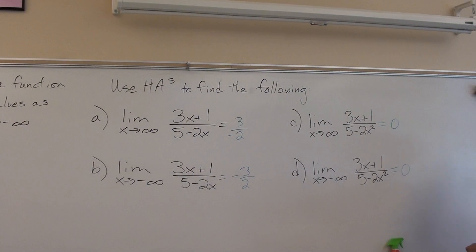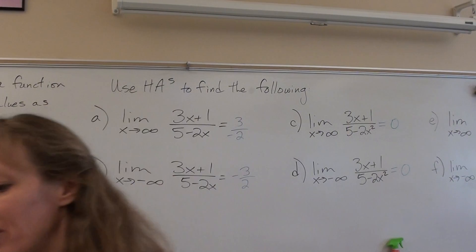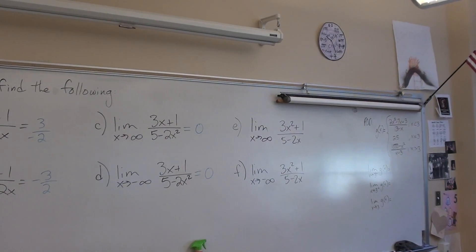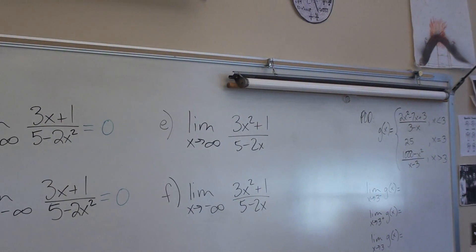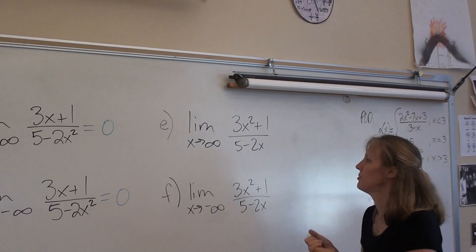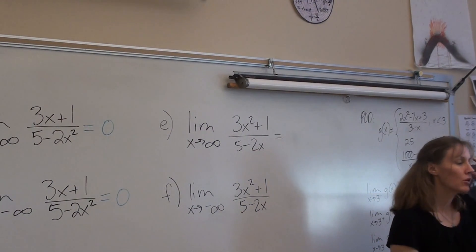But we also have to learn how to do problems of this type, which would be the limit as x approaches infinity of 3x squared plus 1 over 5 minus 2x, and the limit as x approaches negative infinity of 3x squared plus 1 over 5 minus 2x. So now for these, we have the degree of the top bigger. Then there's no horizontal asymptote. So if the limit as x approaches infinity, the answer would be none? No.